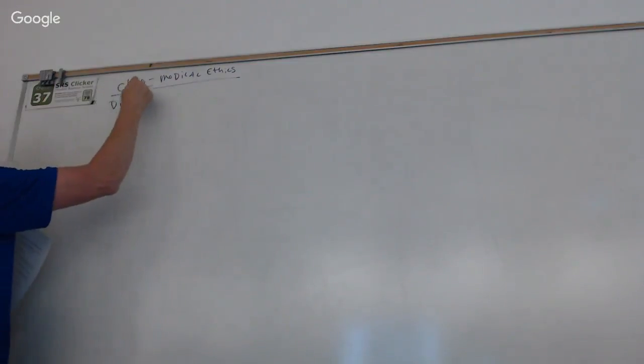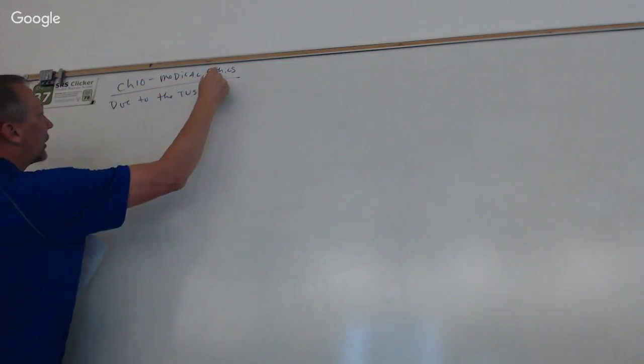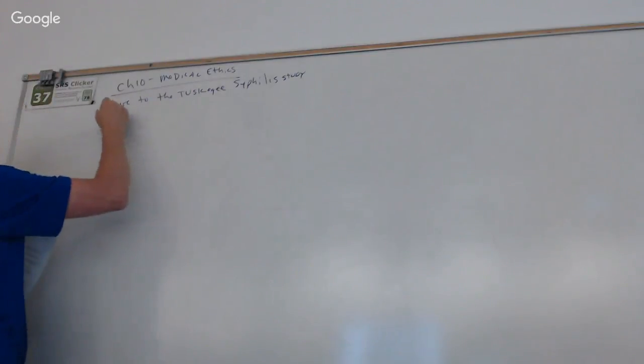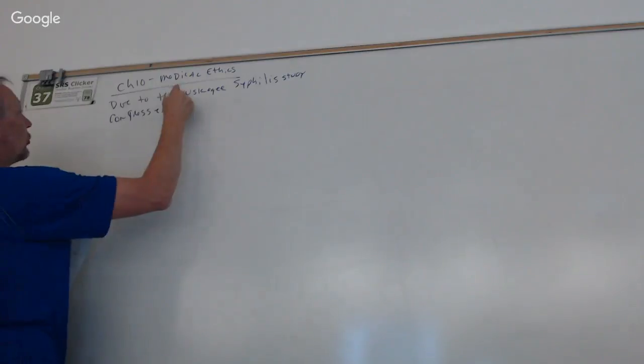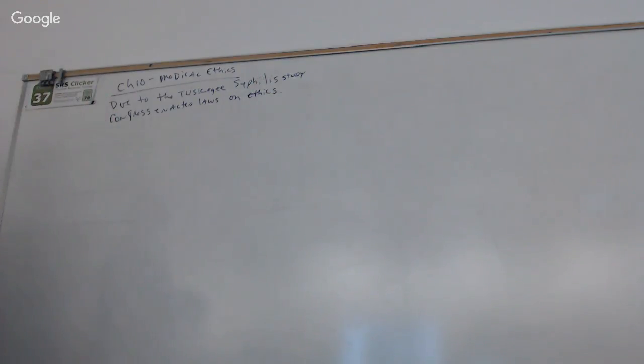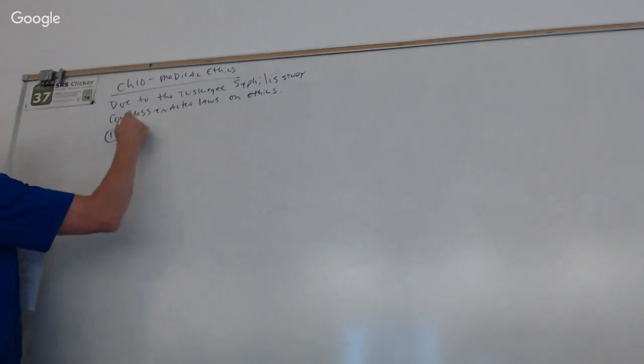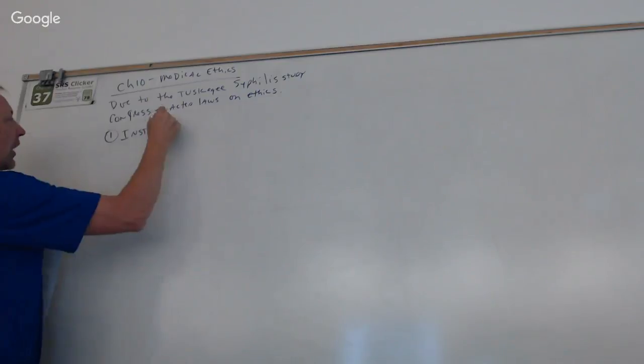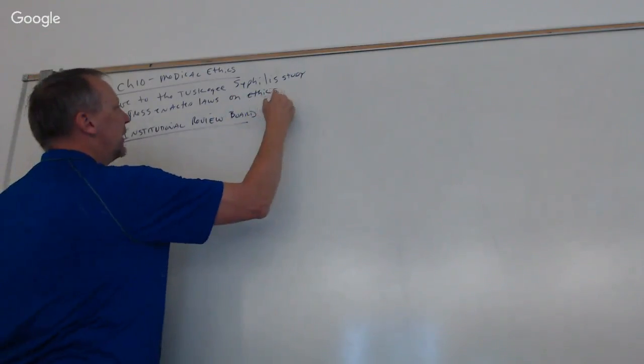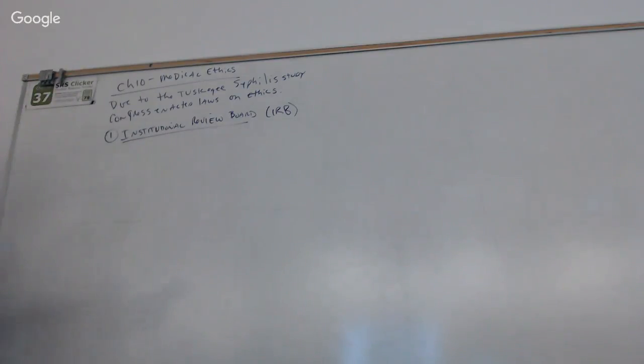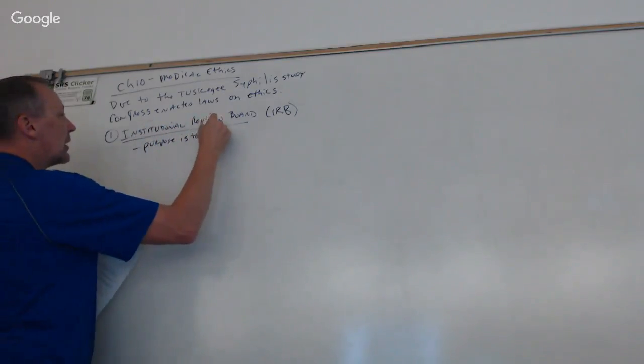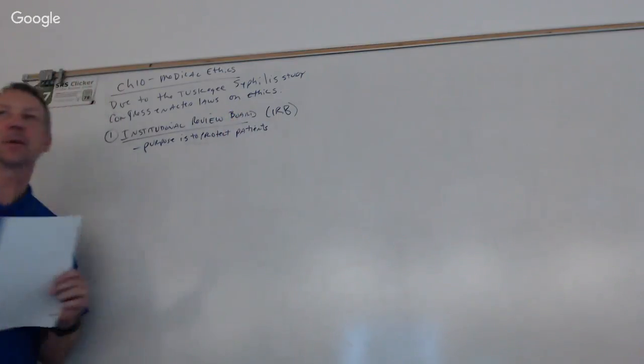Due to the Tuskegee syphilis study, Congress enacted laws on ethics. Now, two of the main things they did was one, we started what's called the institutional review board, a lot of times that's abbreviated IRB. The purpose is to protect patients from unethical studies.